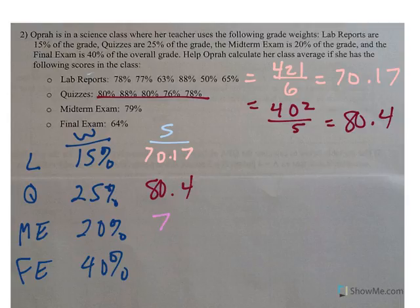Now you can see, midterm, final, there's only one score. So I don't have to really find an average or anything. That one just, it is what it is. So I'm going to multiply each one of these.